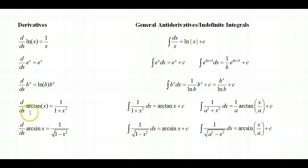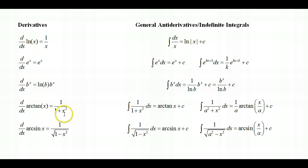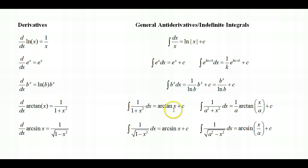We have the derivative of inverse trig functions. The derivative of arctan is 1 over 1 plus x squared. So if I integrate 1 over 1 plus x squared dx, I will arrive at arctangent x plus c.